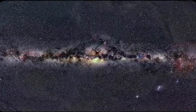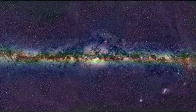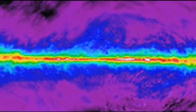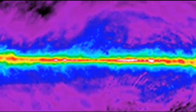Hydrogen atoms in interstellar space emit radio waves, and so in this image, the brightest areas show where most of the hydrogen is. In this case, it is in the plane of the Milky Way.